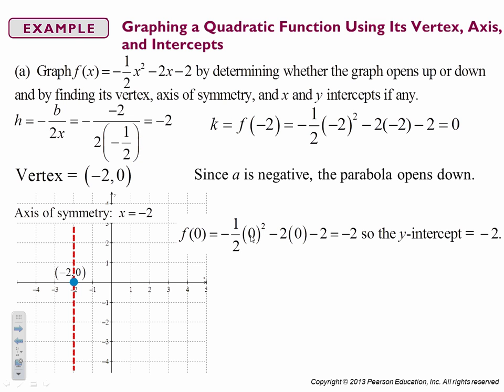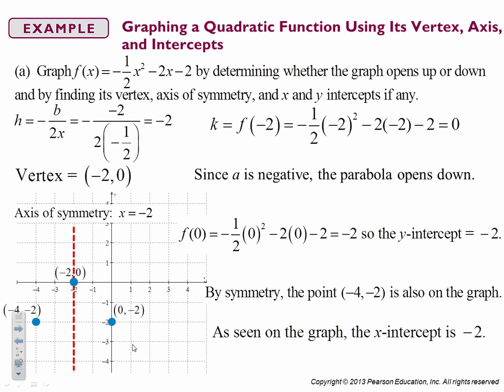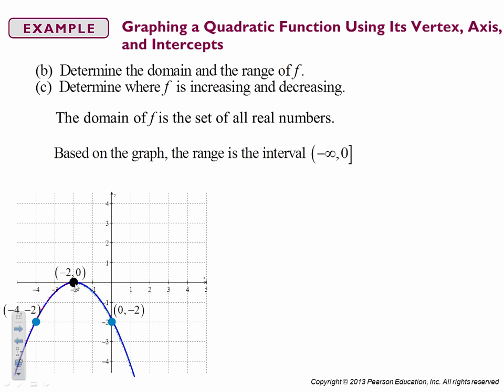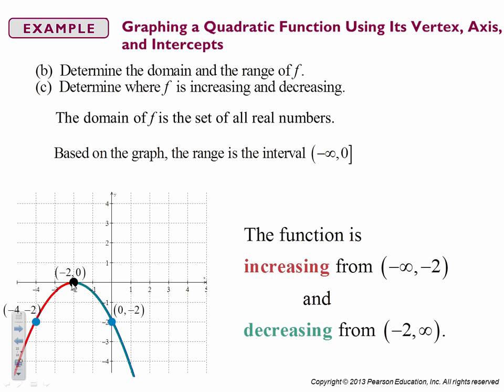So we plug in zero for x, and find that our y-intercept is zero negative two. And by symmetry, so this is over two down two, we go over two down two here. And we have its matching point on the other side. And we put in our nice parabola facing down. Domain is all real numbers. The range is from negative infinity to zero. It's increasing from negative infinity to negative two, and decreasing from negative two to infinity.